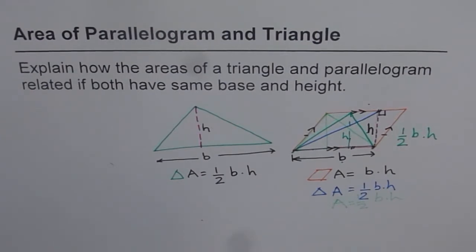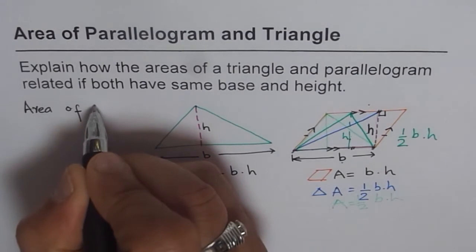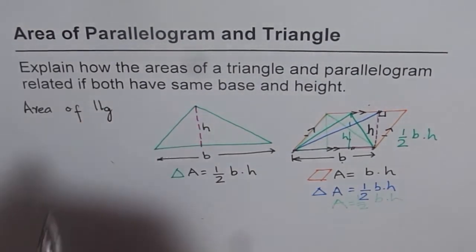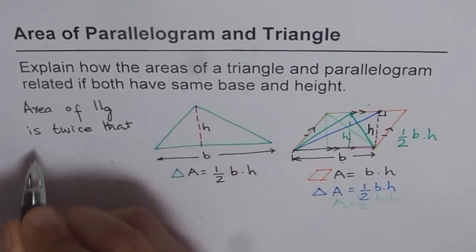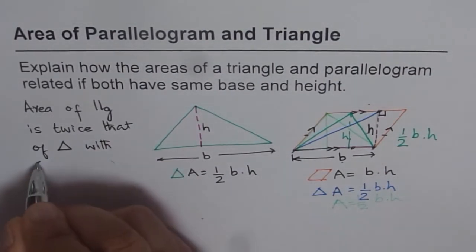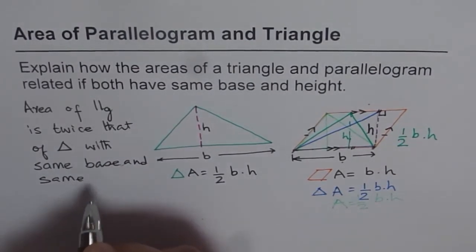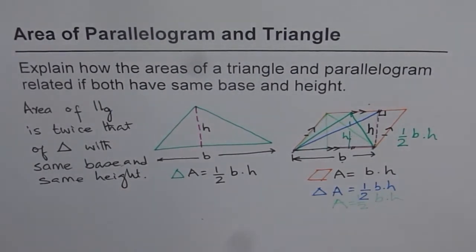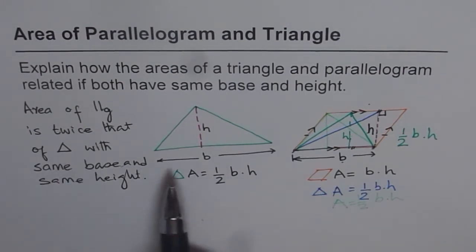So what do you learn from this? The area of a parallelogram is twice that of a triangle with the same base and same height. Or equivalently, the area of a triangle is half the area of a parallelogram with the same base and same height. That is how they are related.